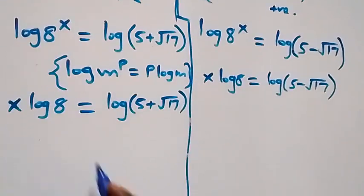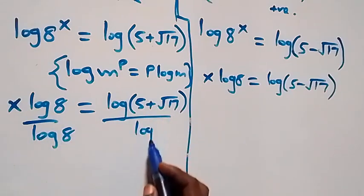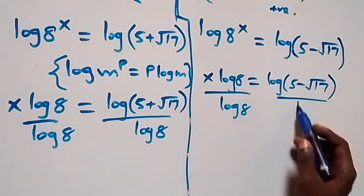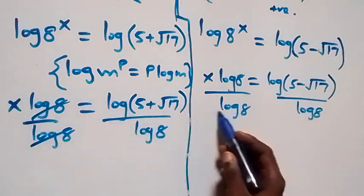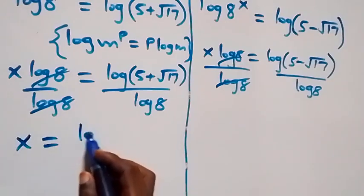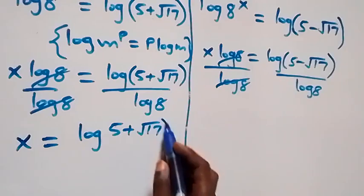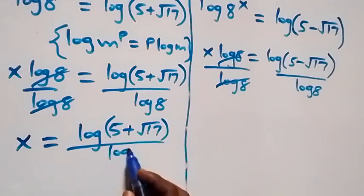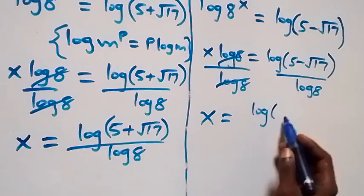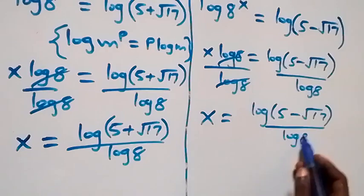When we divide both sides by log 8, the log 8 cancels on the left side. So we have x equals to log (5 plus root 17) over log 8. And similarly, x equals to log (5 minus root 17) over log 8.